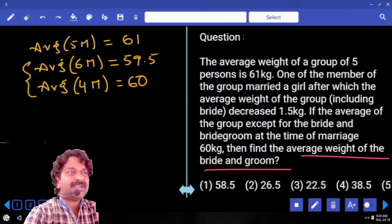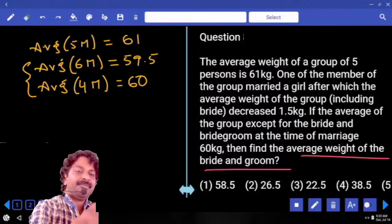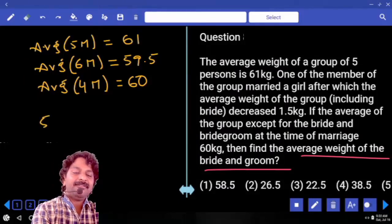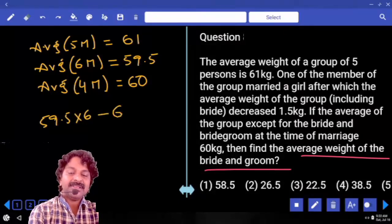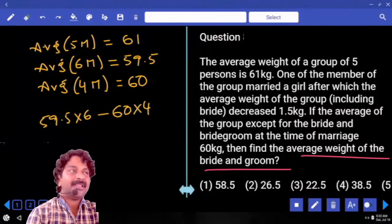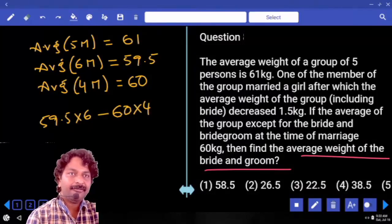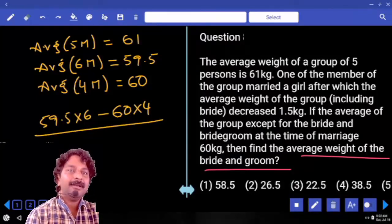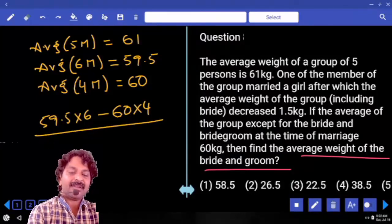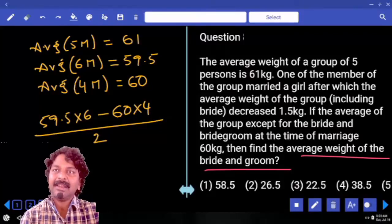We just need only these statements. If you want to solve it, one way is 59.5 into 6 - that gives you sum of 6 members' weight minus 60 into 4, that gives you sum of 4 members' weight. The difference will give you sum of bride and groom weight. We were asked to calculate average, that is divided by 2. This is one way.